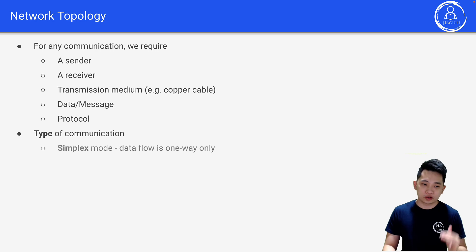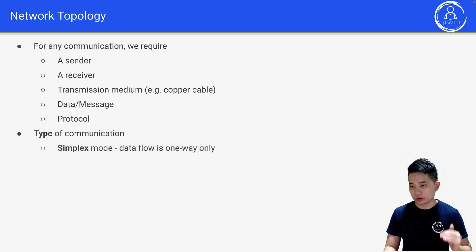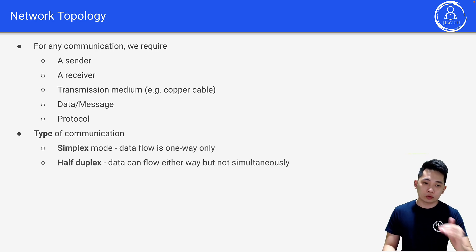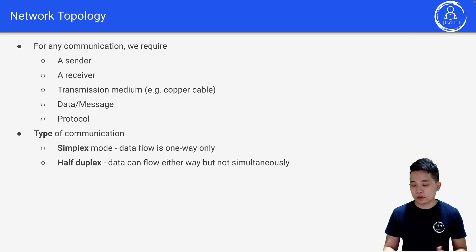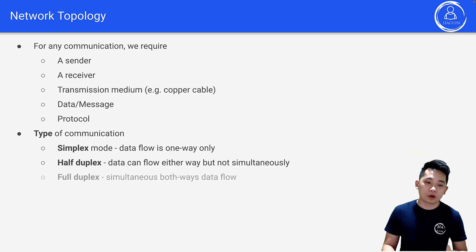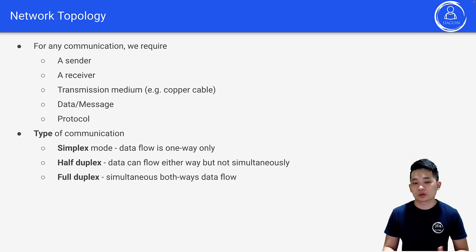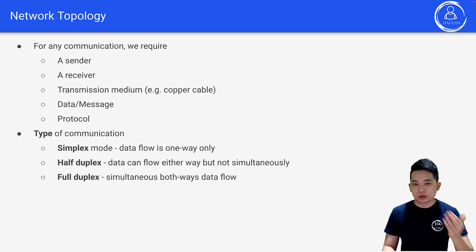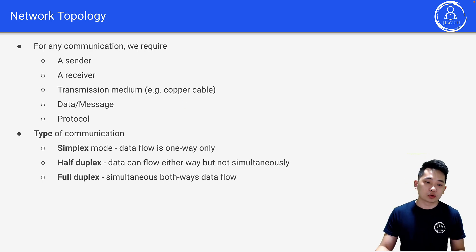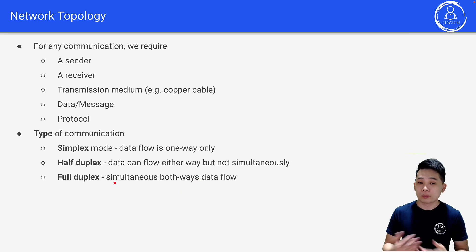There are a few types of communication: simplex mode, which means data flow is only one way; half duplex, which means data can only flow either way but not simultaneously; or full duplex, which is simultaneous both-ways data flow. Nowadays, most communication would be full duplex.